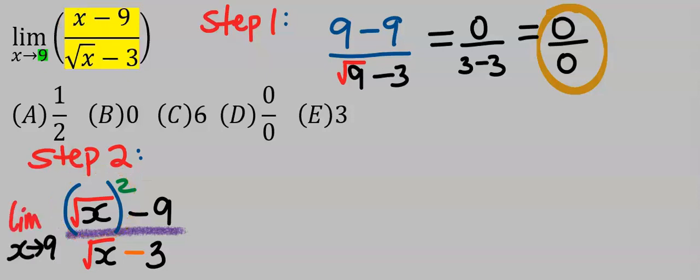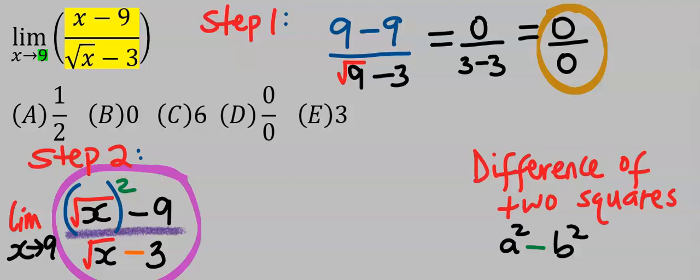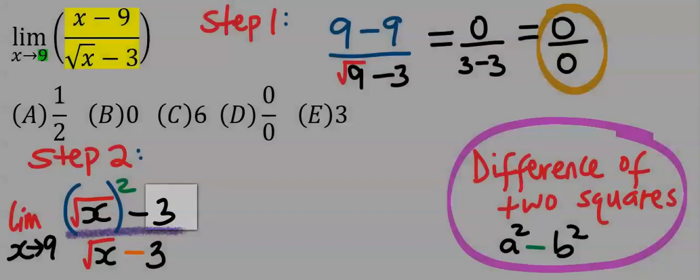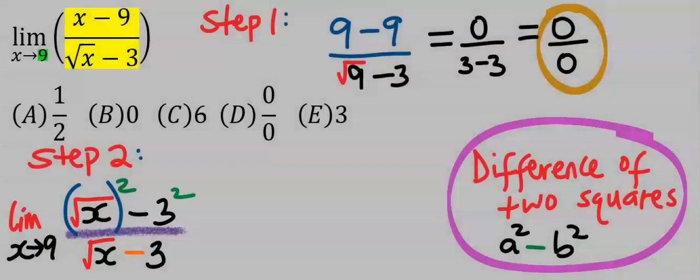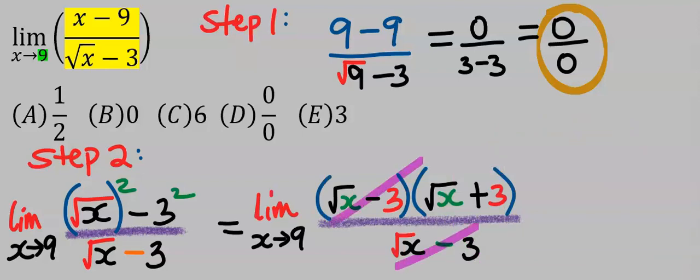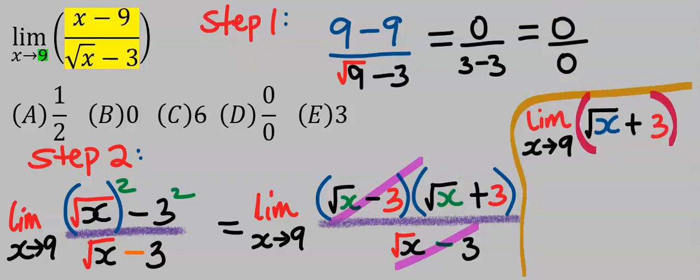Next I will take the limit as x tends to nine. In order to represent this function as difference of two squares, I will modify this nine to become three squared, which is the same thing as nine. Next, represented as difference of two squares, this can now take away this. Next, take the limit of the remaining function as x tends to nine.